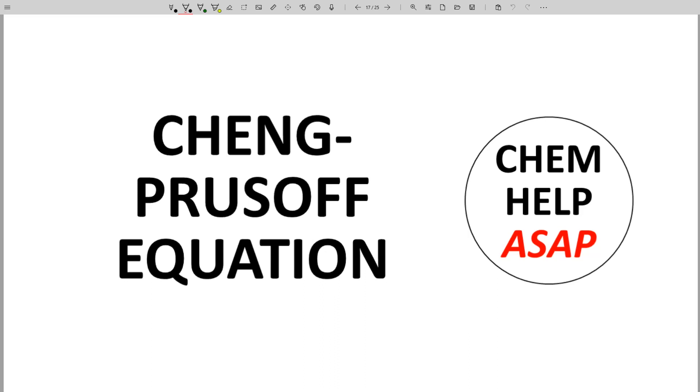Hello from Chem Help ASAP. IC50 values are a great way to report the potency of an enzyme inhibitor, but Ki values have an advantage.